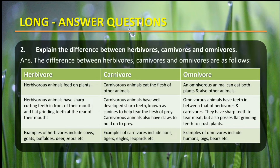Carnivores have well-developed sharp teeth known as canines to help tear the flesh of prey. Carnivore animals also have claws to hold on to prey. Omnivore animals have teeth in between that of herbivores and carnivores — they have sharp teeth to tear meat but also possess flat grinding teeth to crush plants.